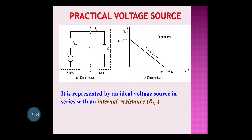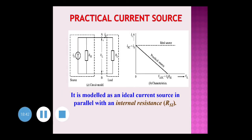Practically, ideal voltage and current sources do not exist — there is a slight decrease in voltage due to internal resistance. A practical voltage source is represented by an ideal voltage source in series with an internal resistance. You can see in the circuit: voltage source VS with internal resistance connected in series, and then the load RL is connected. A practical current source is an ideal current source with the internal resistance connected in parallel.